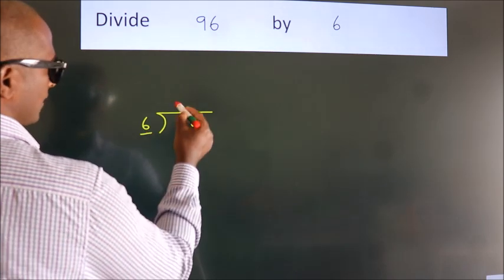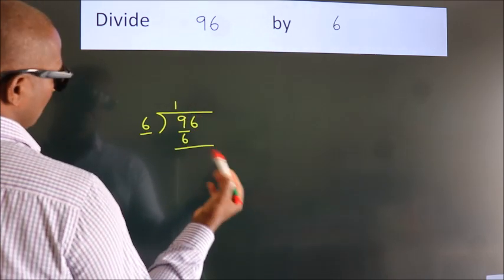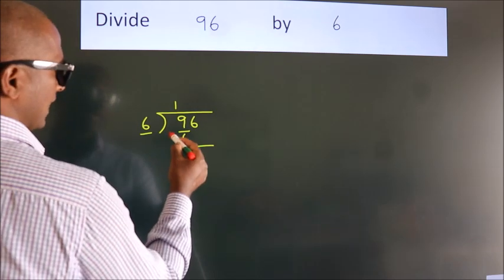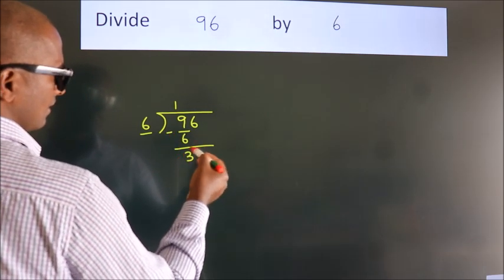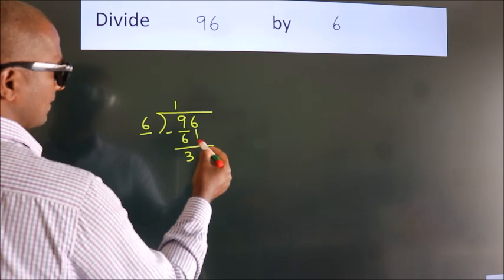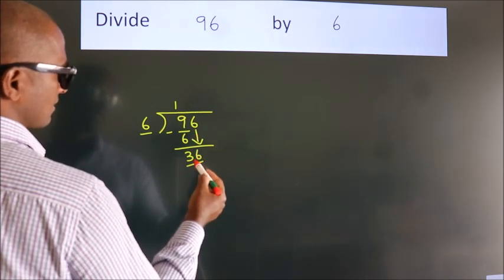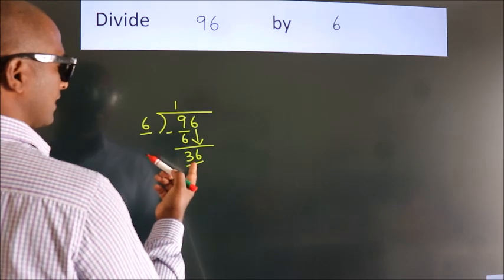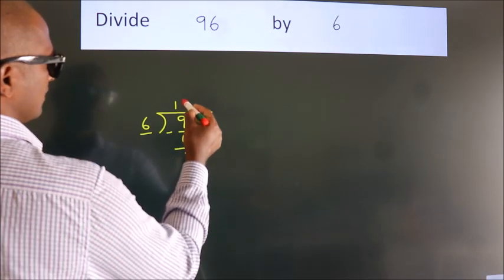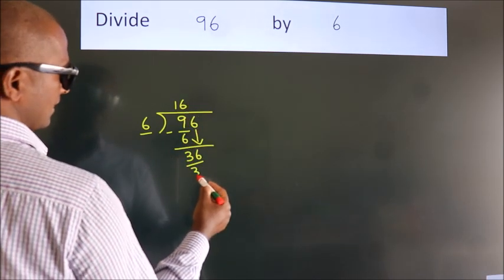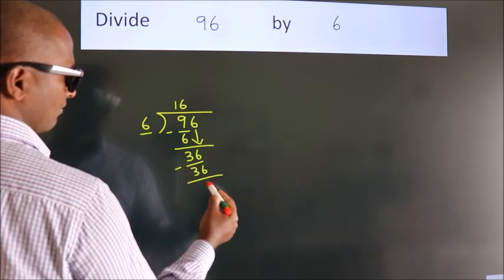6 once is 6. We subtract 9 minus 6 and get 3. After this, we bring down the beside number, which is 6, giving us 36. In the 6 times table, 6 sixes are 36. Now we subtract.